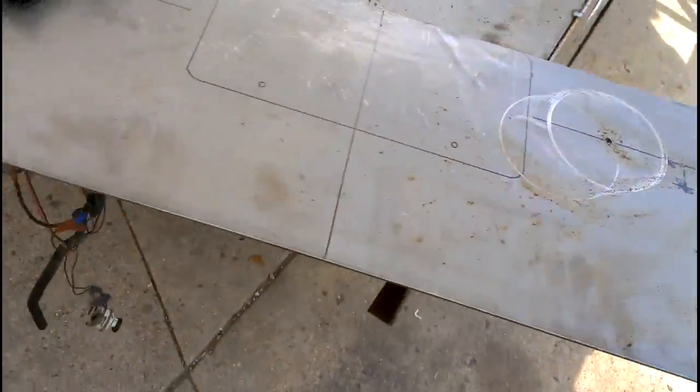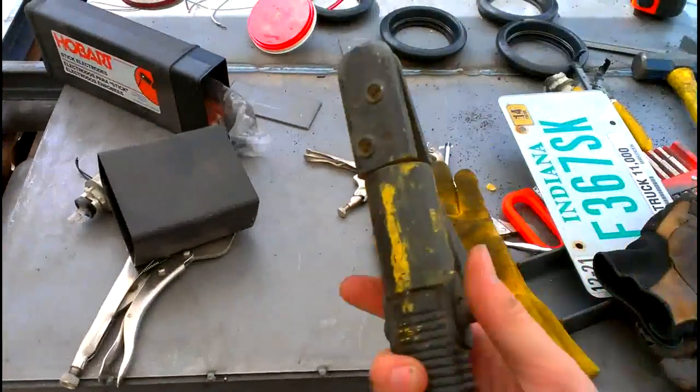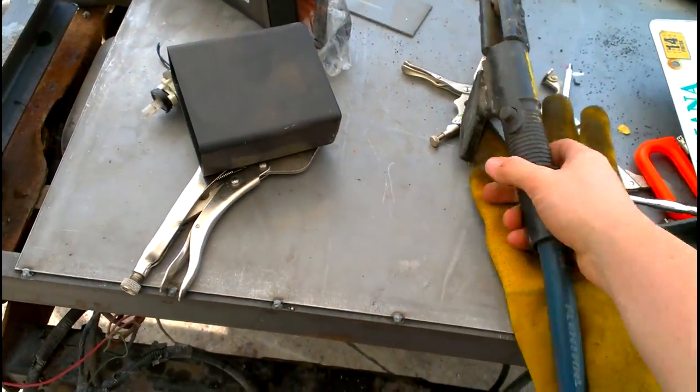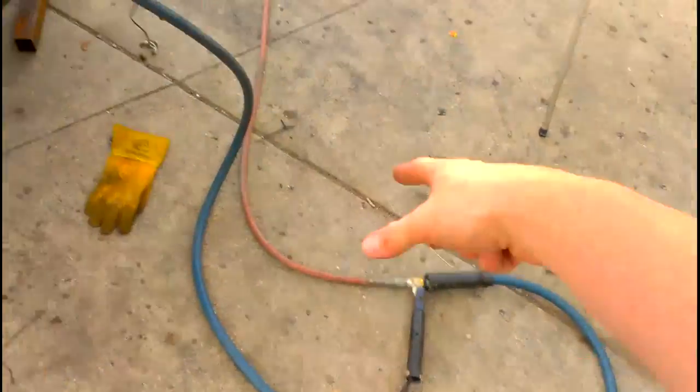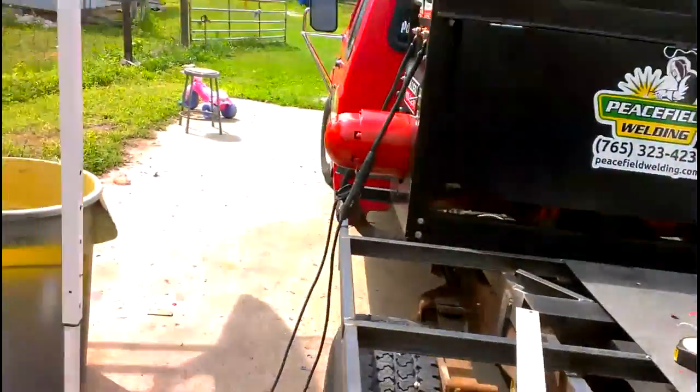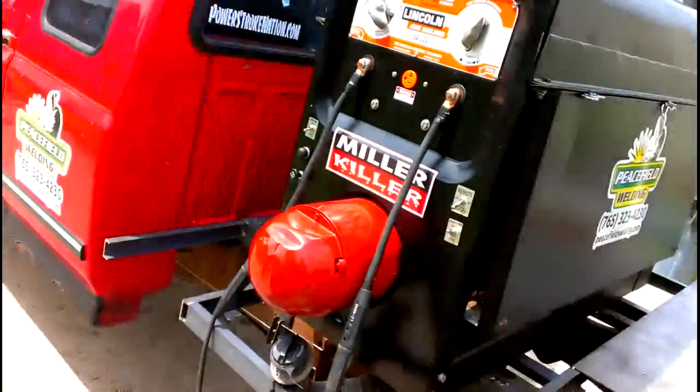Anyway, so you get to see something cool here. This is an arc air torch. Basically what it is, is you've got a line running back to your compressor, which happens to be in there, and then I've got the other line running over here to my SA200.